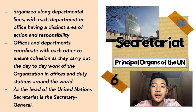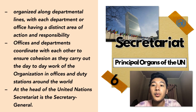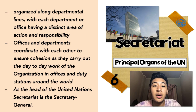The last principal organ of the United Nations is the Secretariat. It is organized along departmental lines with each department or office having a distinct area of action and responsibility. Offices and departments coordinate with each other to ensure cohesion as they carry out the day-to-day work of the organization in offices and duty stations around the world. At the head of the United Nations Secretariat is the Secretary-General.